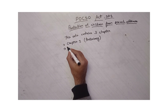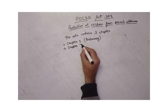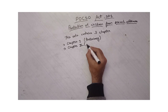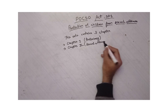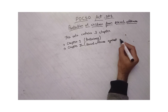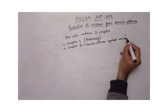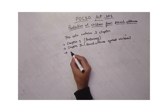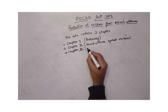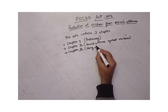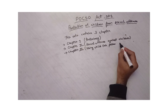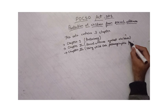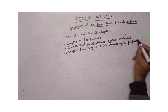And the next is Chapter 2, which covers offenses against children using a child for sexual purpose, and their punishment is also defined.